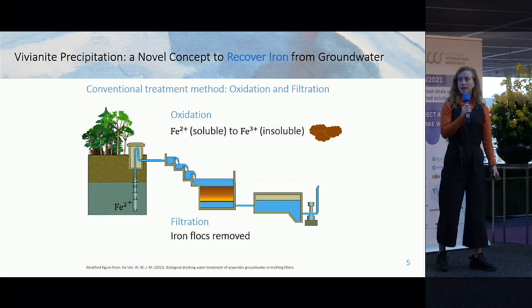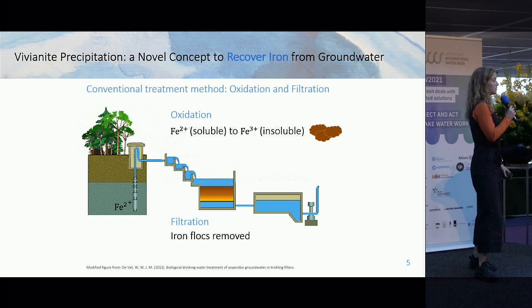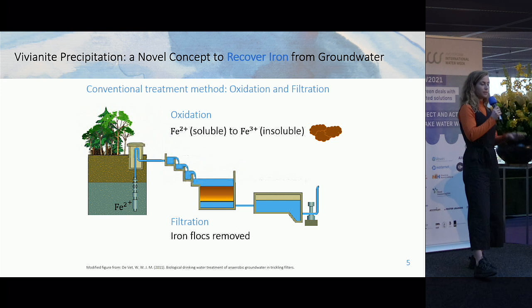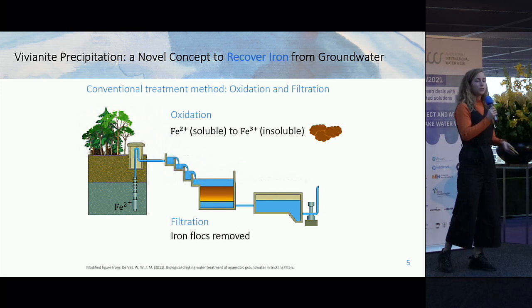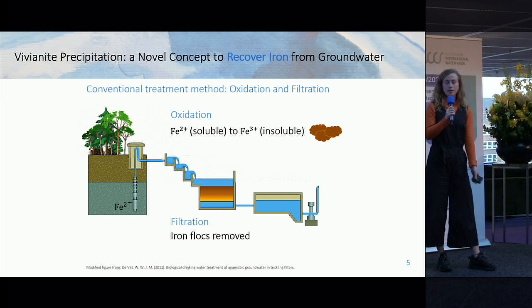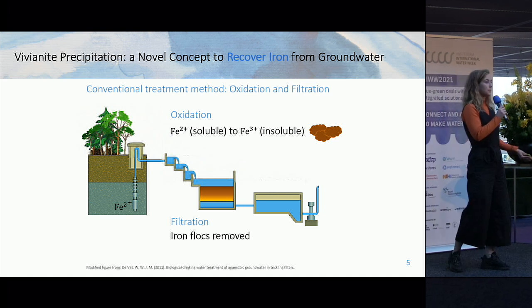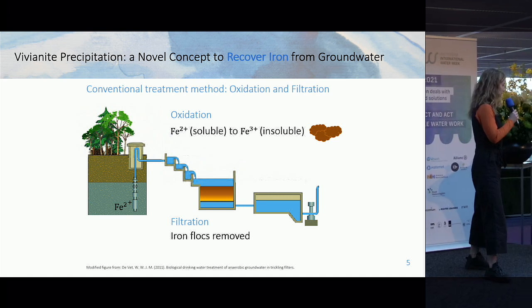With the conventional method, you first aerate the groundwater to oxidise the anaerobic iron-2 to iron-3. Iron-3 is insoluble, so flocs are formed, which are then removed in the filter bed.